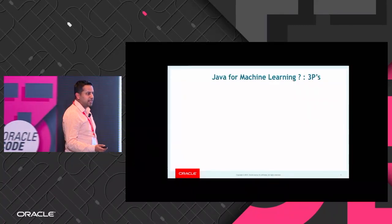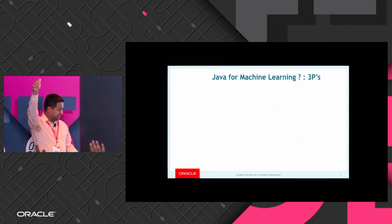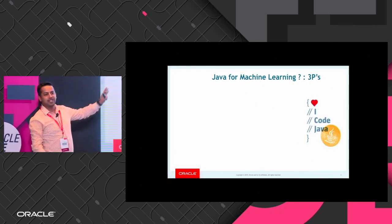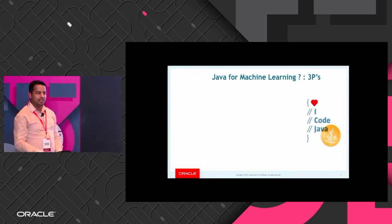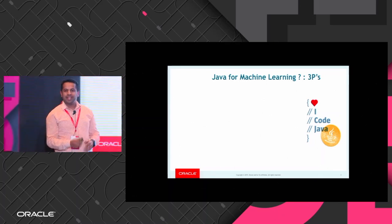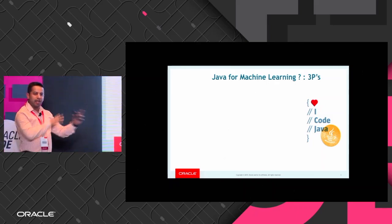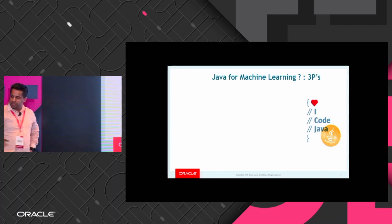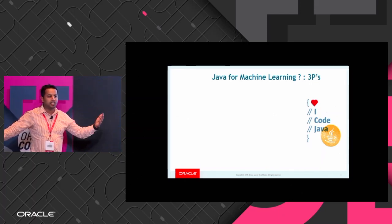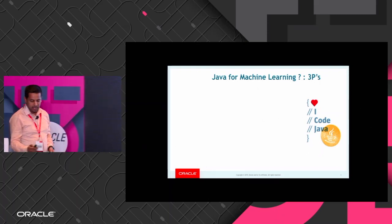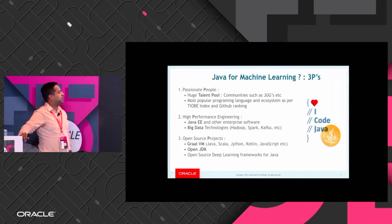Why Java and why machine learning? A lot of people who are Java developers love Java. But many people say Java is kind of intimidating or scary, and that the whole machine learning community is going in the Python direction. But that's not necessarily the case — it's just a trend. Java has its place, and there are a lot of libraries to showcase. I call it the three Ps: why Java should play a bigger role in machine learning.